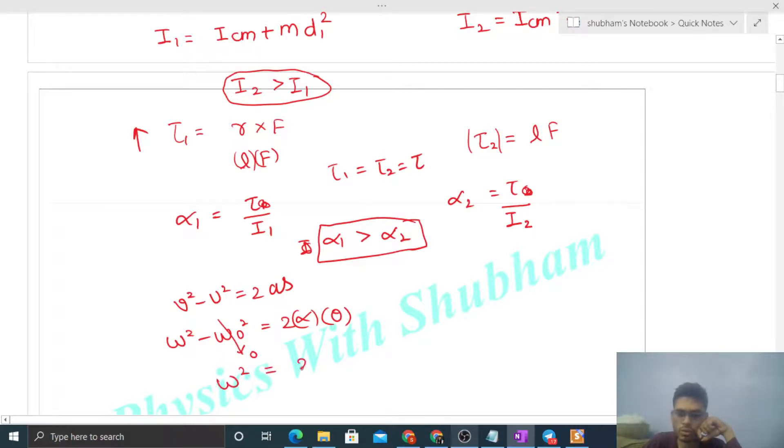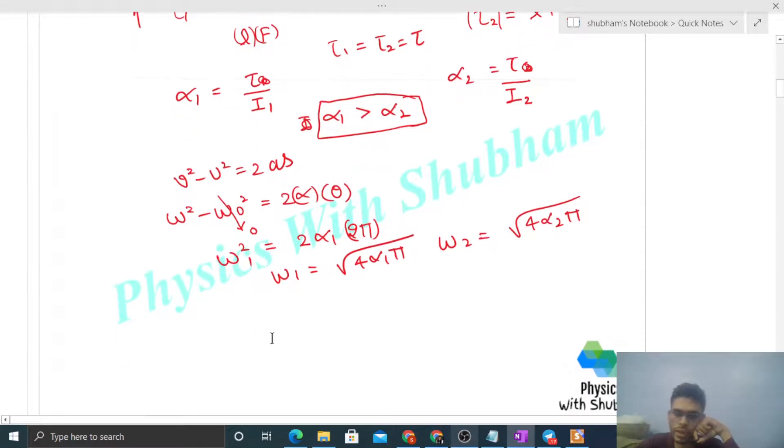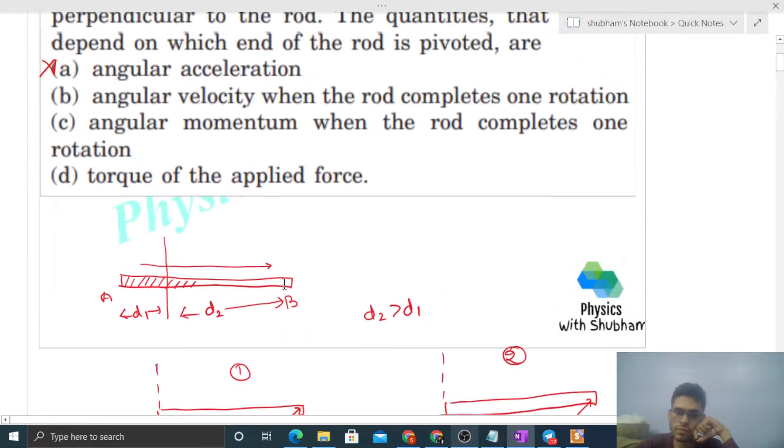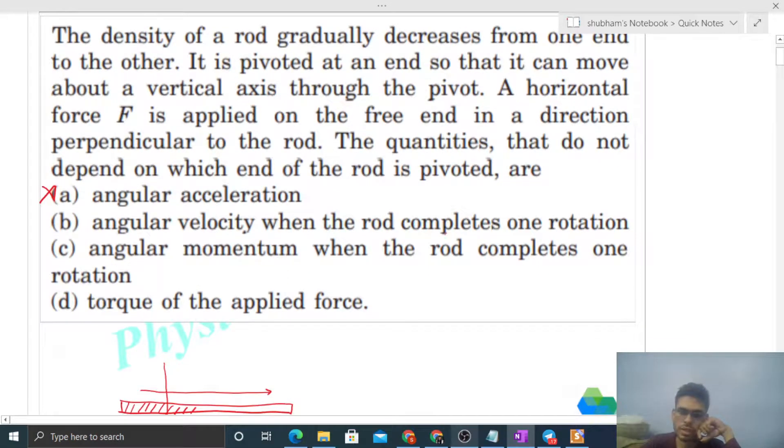For the first case, alpha one, theta is 2π, so ω1 equals square root of 4α1π. Similarly, ω2 equals square root of 4α2π. You can see omega depends on alpha. Since alpha 1 is greater than alpha 2, omega 1 will be greater than omega 2. So omega after one rotation is not the same.